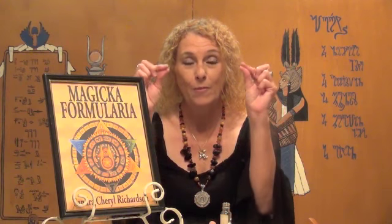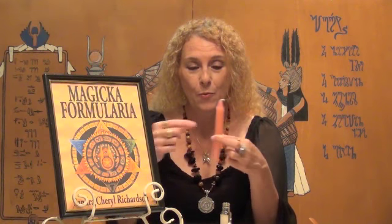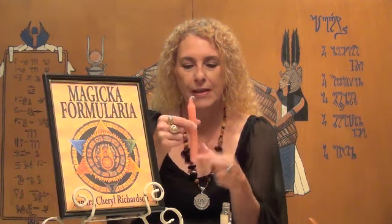I'm going to demonstrate the procedure. You take your oil and you put it upon your forefinger as such, rub it between your forefinger and your thumbs, then you take your candle and rubbing from the center of the candle upward you rub the oil upon the candle focusing on your intent, and then with the other hand you rub the oil downward focusing on your intent.